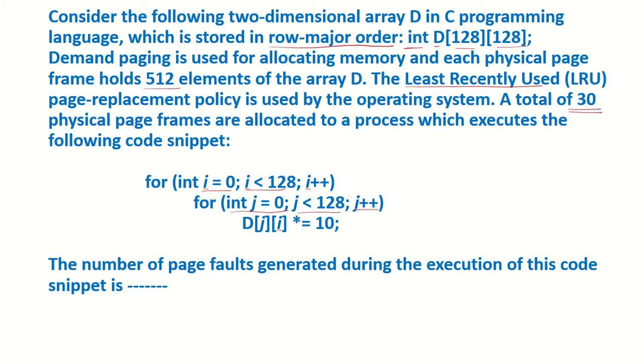D[j][i] equals D[j][i] times 10. The number of page faults generated during the execution of this code snippet is what?